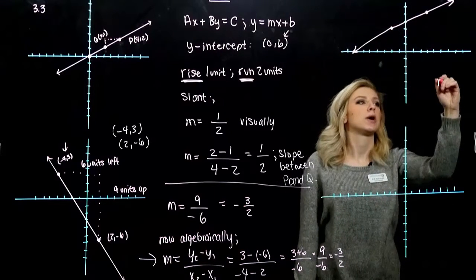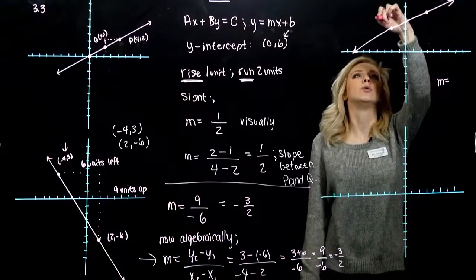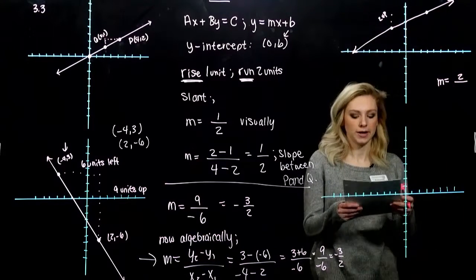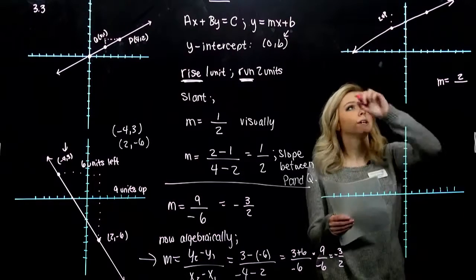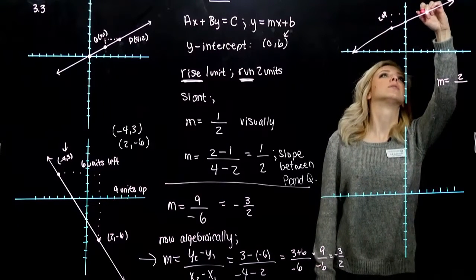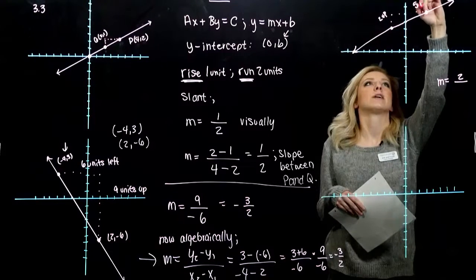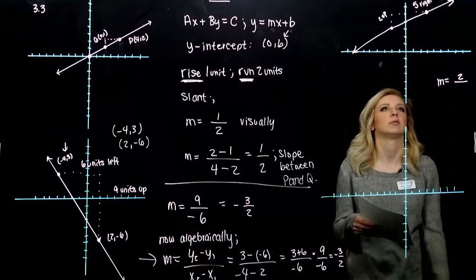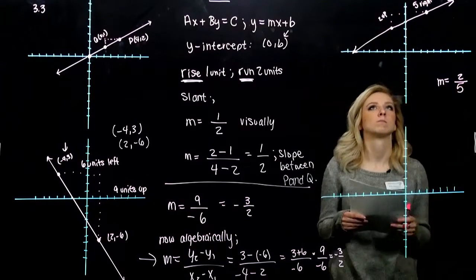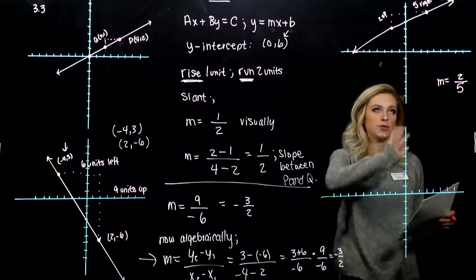Then, how many did we have to run to get to the next point? From here, 1, 2, 3, 4, 5 of them. So positive, positive direction. And it's increasing from left to right, so it should be positive. So we're thinking 2 fifths.